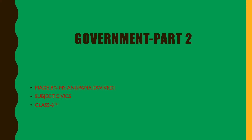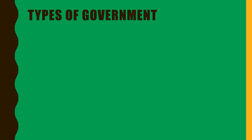Government, Part 2. Types of government. There have been three types of government in the history of mankind. These are monarchy, dictatorship, and democracy.